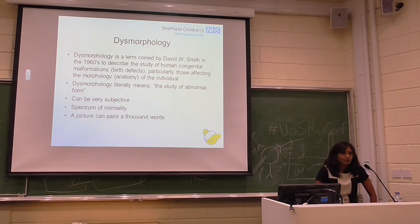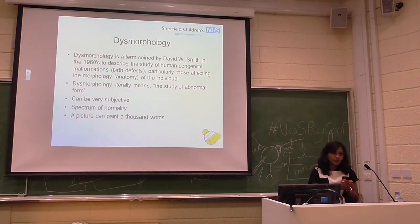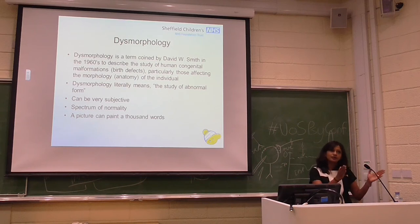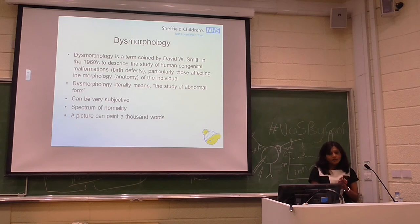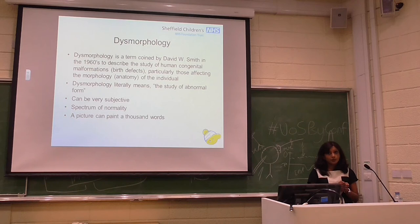I keep mentioning the word dysmorphology. What is that? It was a term coined by David W. Smith in the 1960s to describe the study of normal morphology — any deviation from the norm was said to be dysmorphology. This can be very subjective. We might show photographs of patients in clinical meetings and a colleague might disagree about whether clinical features are present. We need to think about the spectrum of normality. In dysmorphology assessment, a picture can paint a thousand words, so we rely quite heavily on taking clinical photographs with appropriate informed consent.